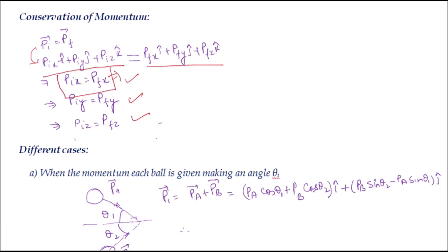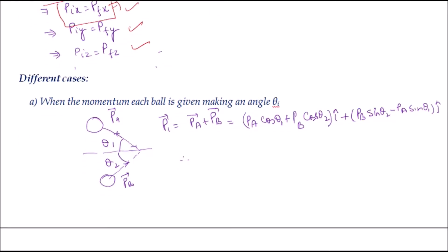We also looked at different cases for calculating initial momentum. If body one makes angle θ₁ clockwise with the x-axis and body two makes angle θ₂ anti-clockwise, we break momentum into components. The net initial momentum is: (p_A cosθ₁ + p_B cosθ₂)î + (p_B sinθ₂ − p_A sinθ₁)ĵ.